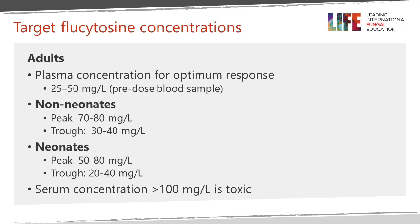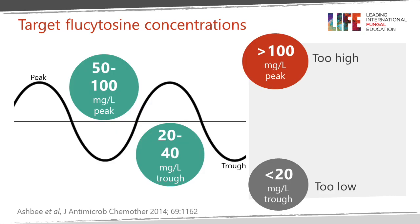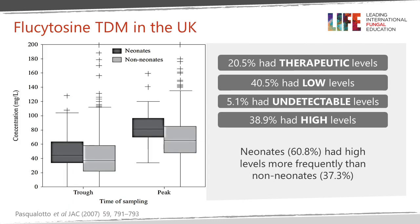Optimal plasma concentrations for flucytosine are between 20 and 50 for trough levels. The recommendation is 70 to 80 for peak and 30 to 40 for trough — peak levels should be between 50 and 100, trough between 20 and 40, avoiding levels above 100 or below 20. In one UK study, only 21% of patients were actually in the normal range: 41% had low levels, 5% undetectable, and nearly 40% had high levels. Neonates in particular had high levels more frequently than non-neonates.